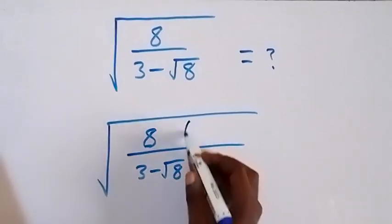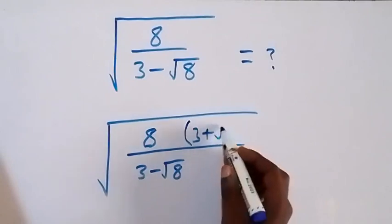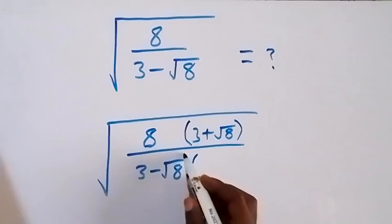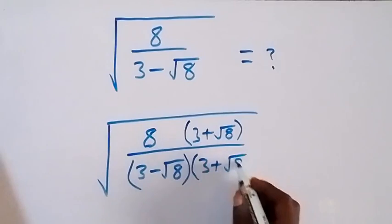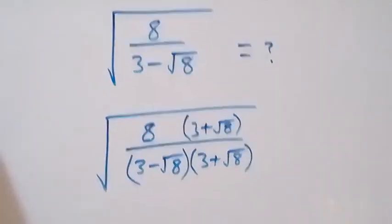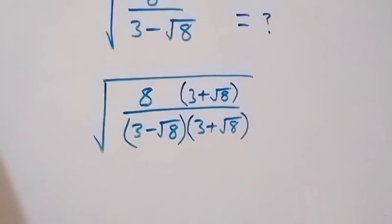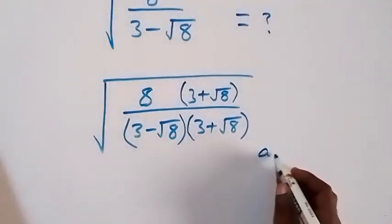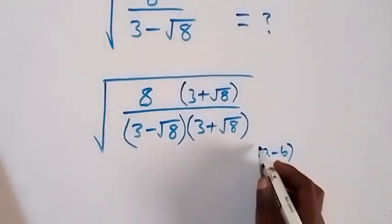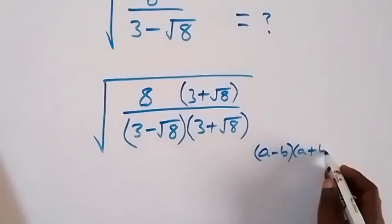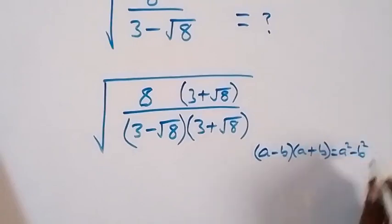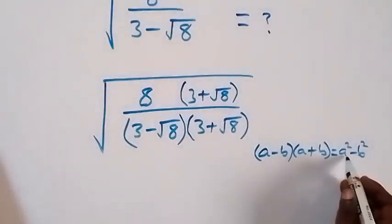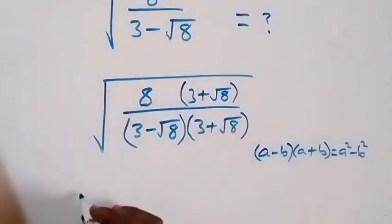The conjugate here is 3 plus root 8, so we multiply both numerator and denominator by 3 plus root 8. When we simplify, what we have here follows the pattern of a minus b times a plus b, which is the same as a squared minus b squared.